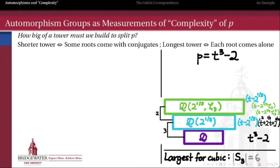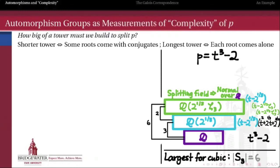Because we have one root, we can split off a factor of t minus that root — t minus 2 to the 1/3. But that quadratic that remains is irreducible. So in order to split it, we also have to adjoin the cubed root of unity, zeta 3. When we do that, now we can split the entire polynomial. That first step was a degree 3 extension, the second step was a degree 2 extension, and therefore the total extension is degree 6. Since we've arrived at the splitting field of this polynomial, splitting fields are always normal extensions, and therefore by the normal extension theorem there will be exactly as many automorphisms of this splitting field as the degree of that extension.